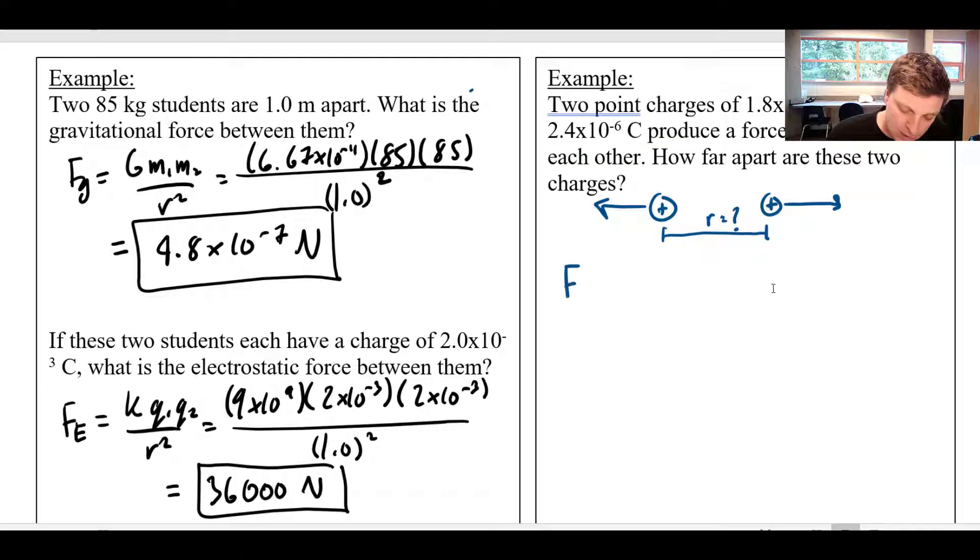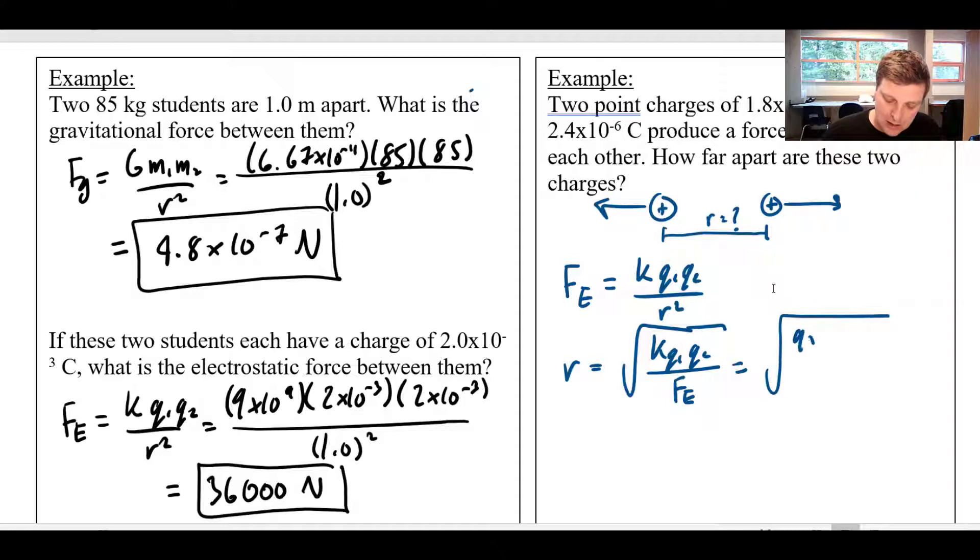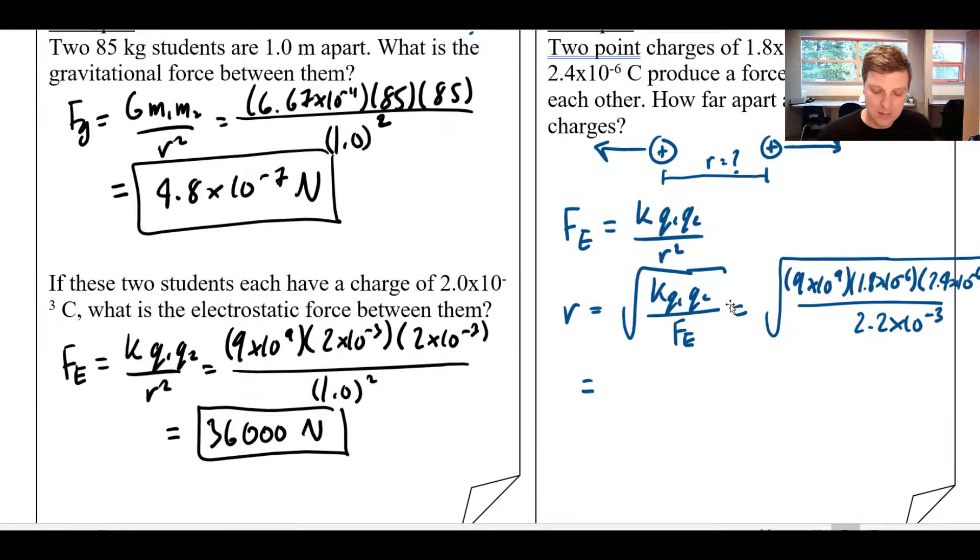Well, looking at my formula for Coulombs Law, I see that Fe equals KQ1Q2 over r squared. And so solving for r, that's going to be equal to the square root of KQ1Q2 all over Fe. And so when I plug my values in here, 9 times 10 to the 9 times 1.8 times 10 to the negative 6 times 2.4 times 10 to the negative 6, divided by 2.2 times 10 to the negative 3. When I put that all in my calculator, I end up with 4.2 meters of separation.